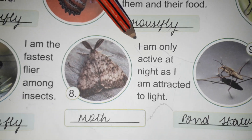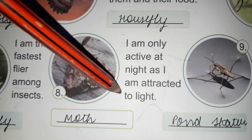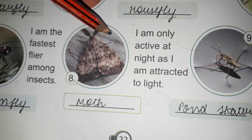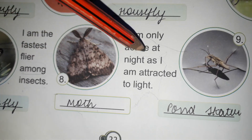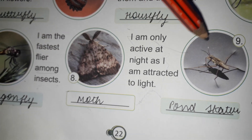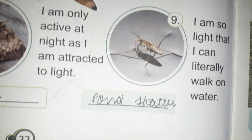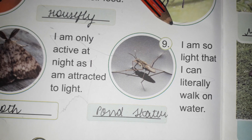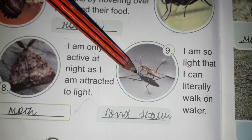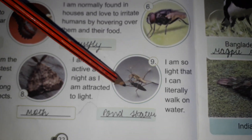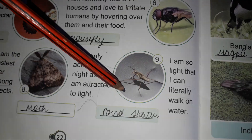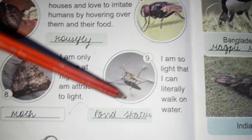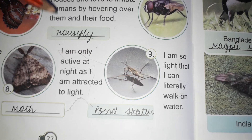I am only active at night and I am attracted to light — that is a moth. Next: I am so light that I can literally walk on water. That is a pond skater. The pond skater is an insect which can walk on the water surface.